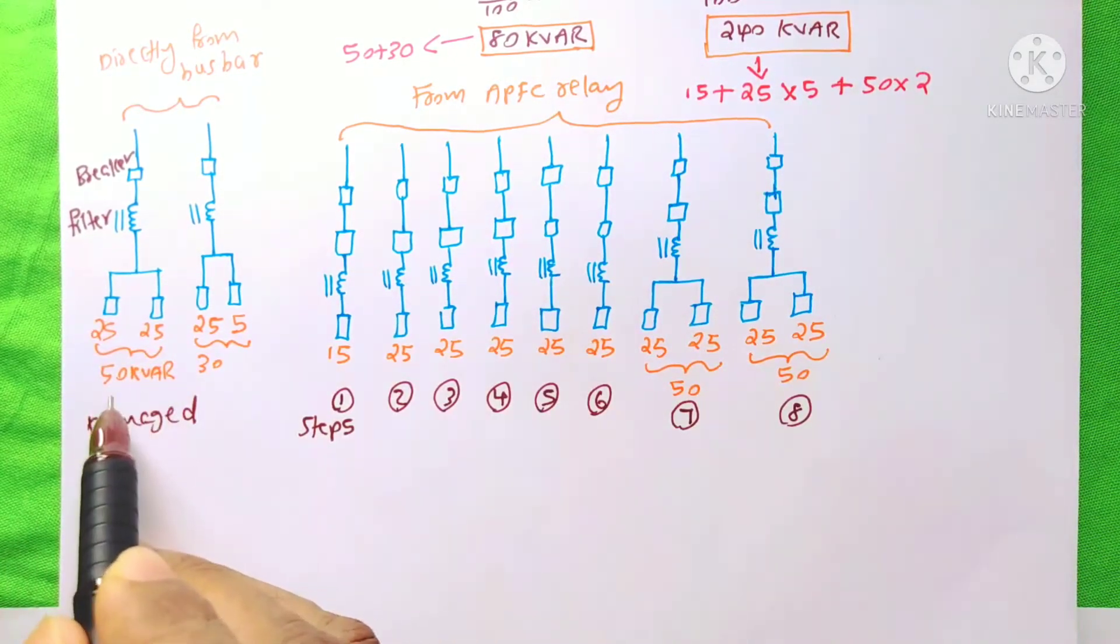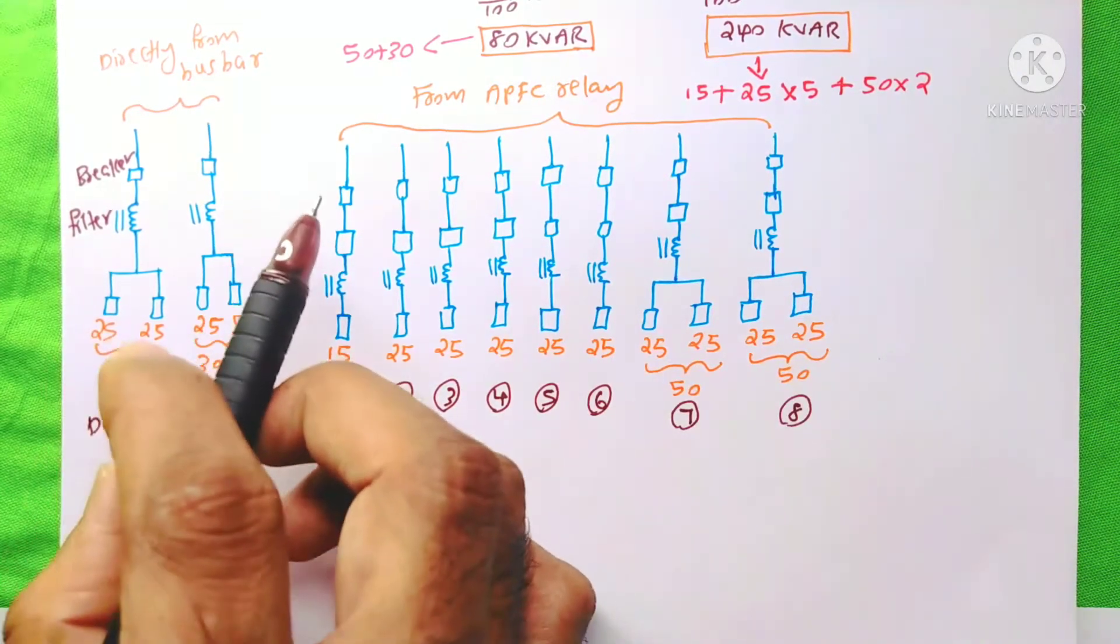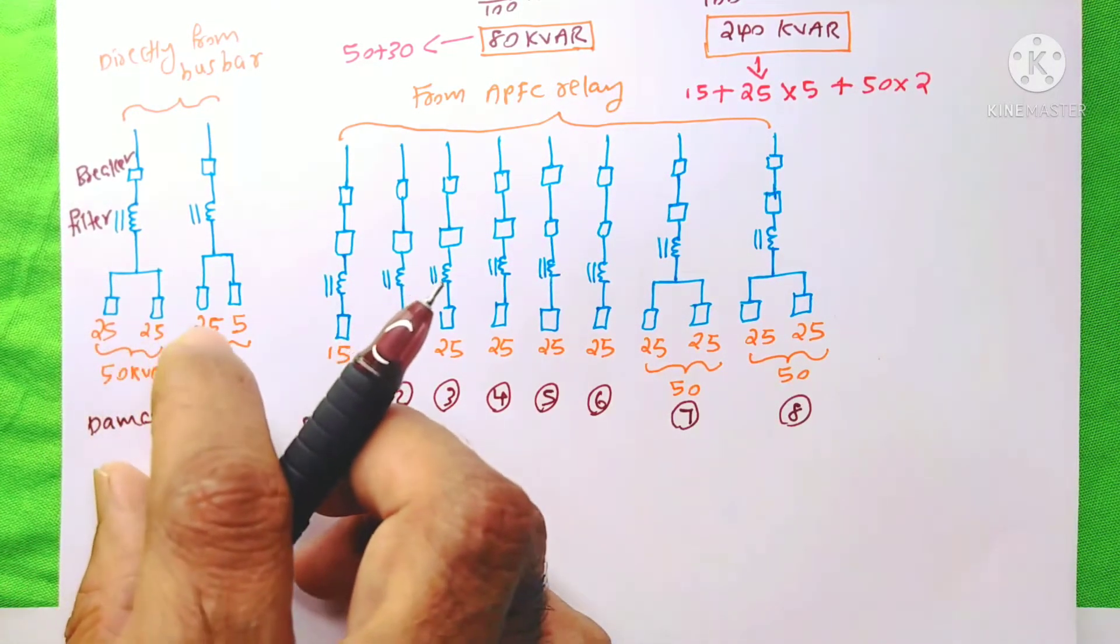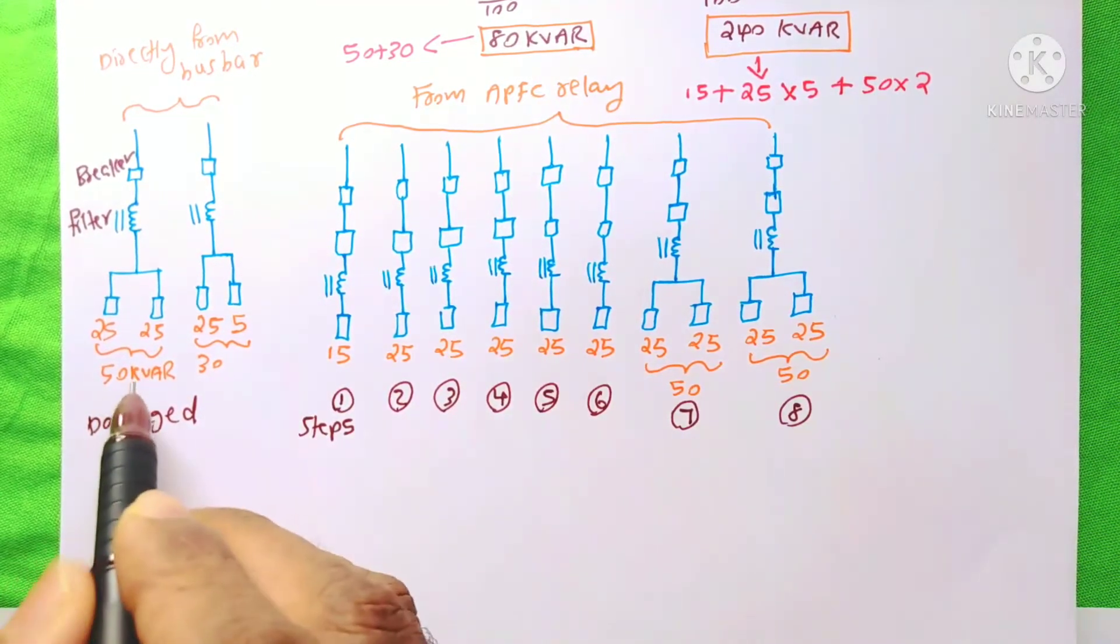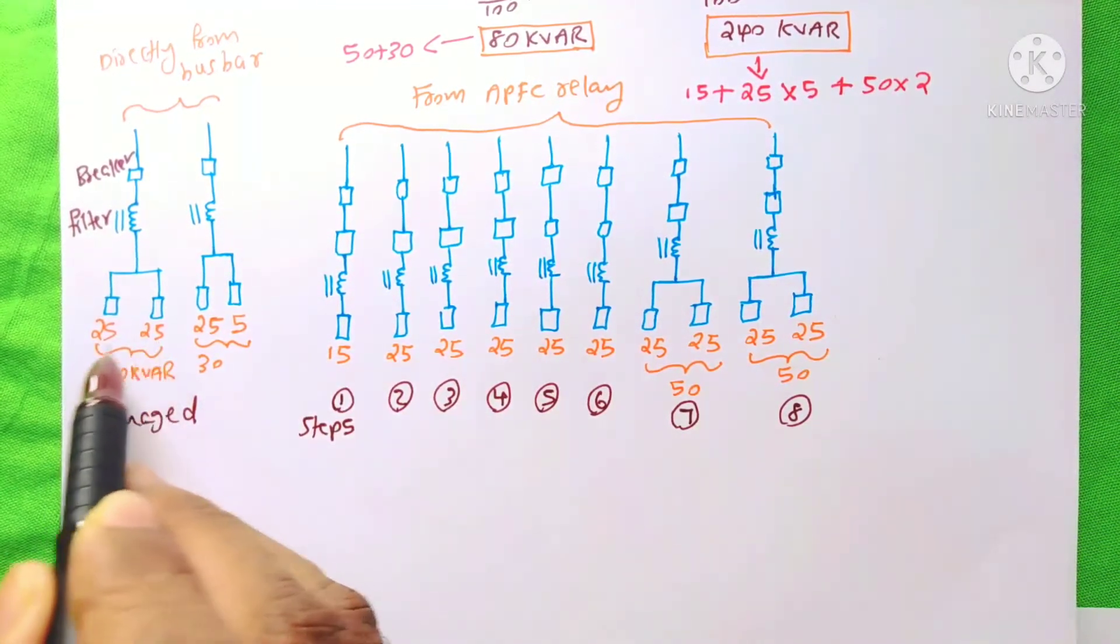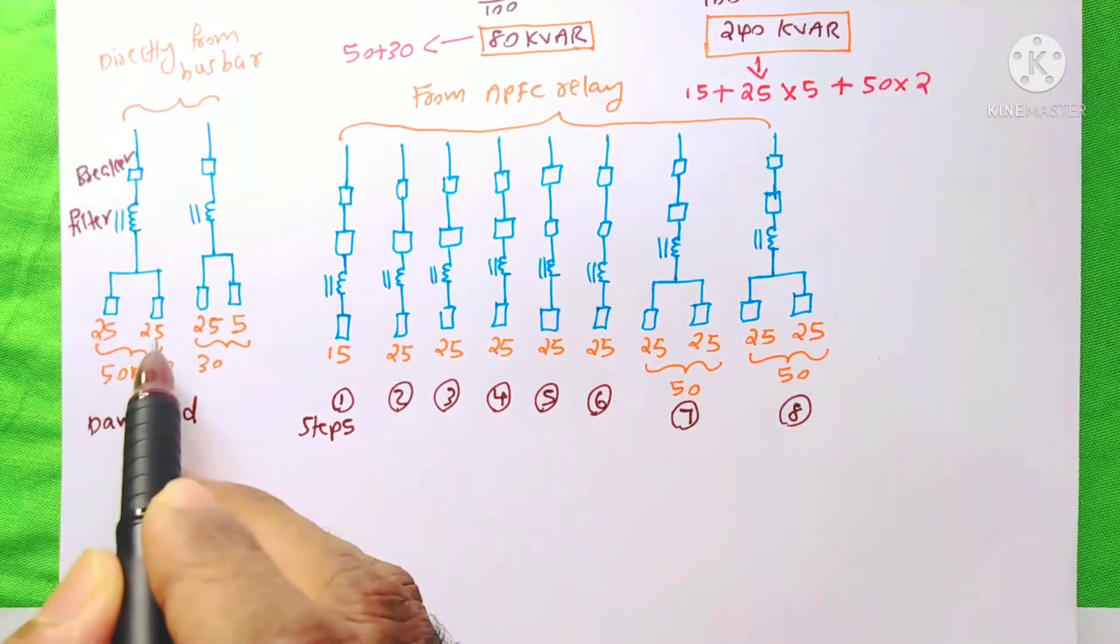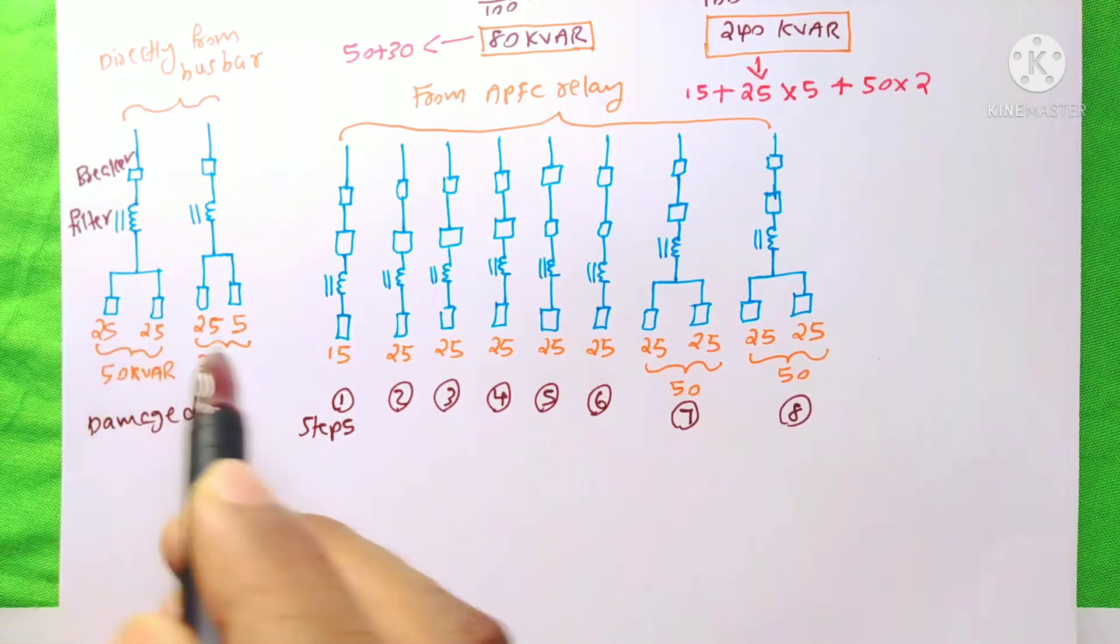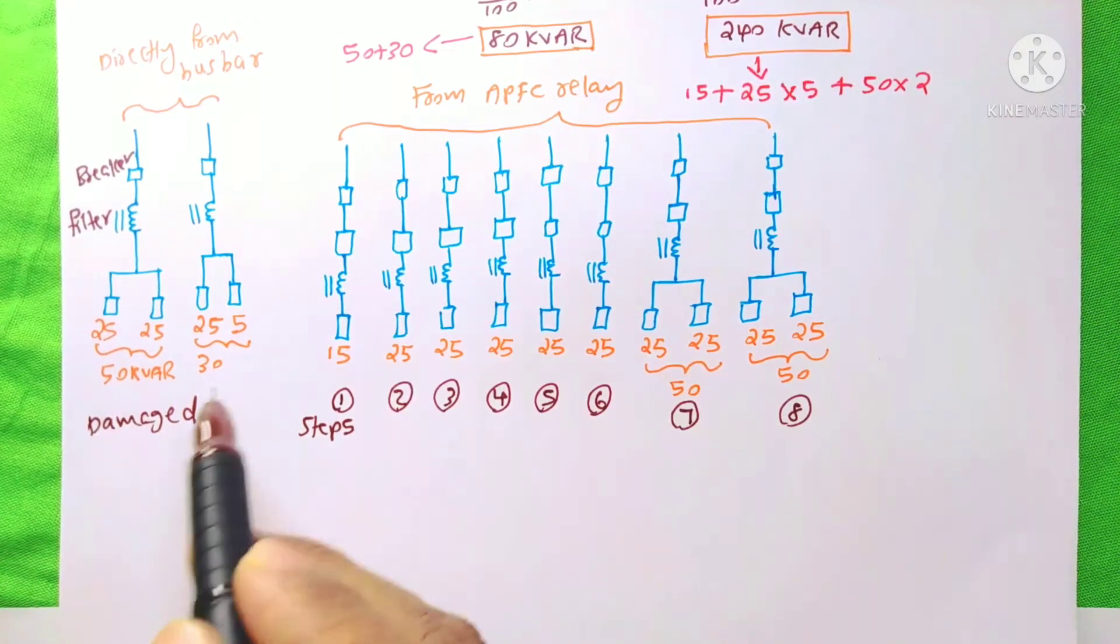If I connected the 50 kVAR a single capacitor, then if it damaged, then until we replace that, our system will not get the power factor correction. But if we use the 2 different 25 kVAR, even if one is damaged, then the other will be on the line. At that time, it can handle our power factor requirement.